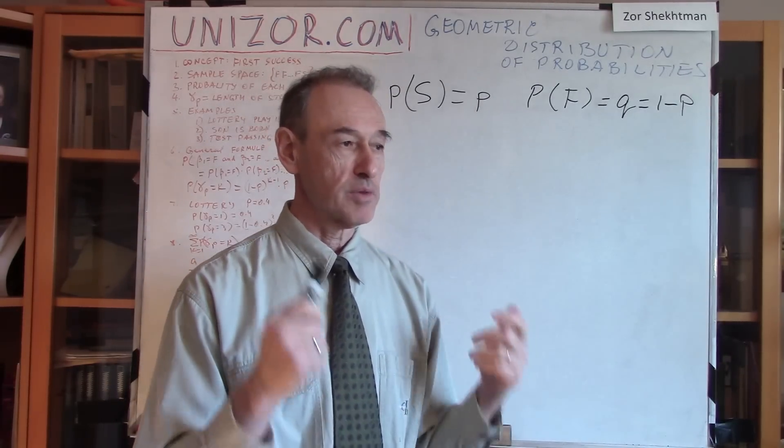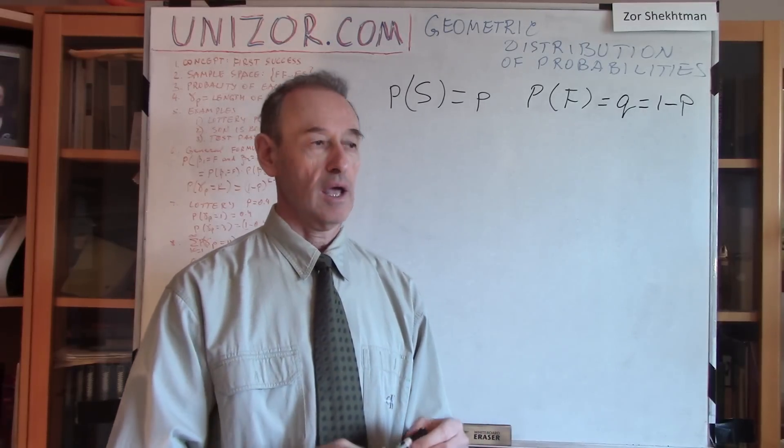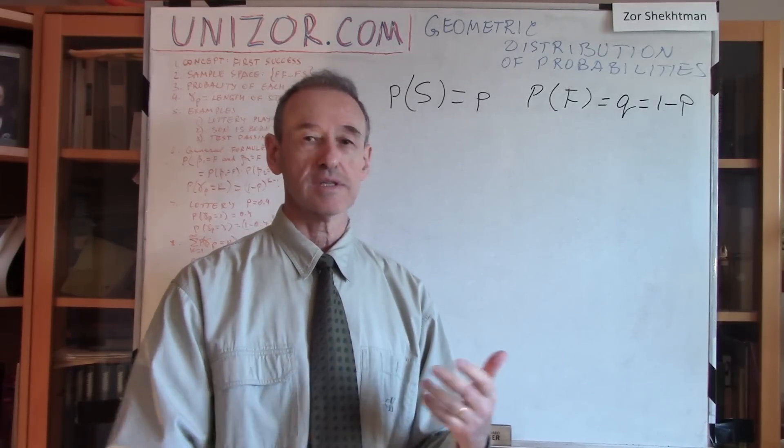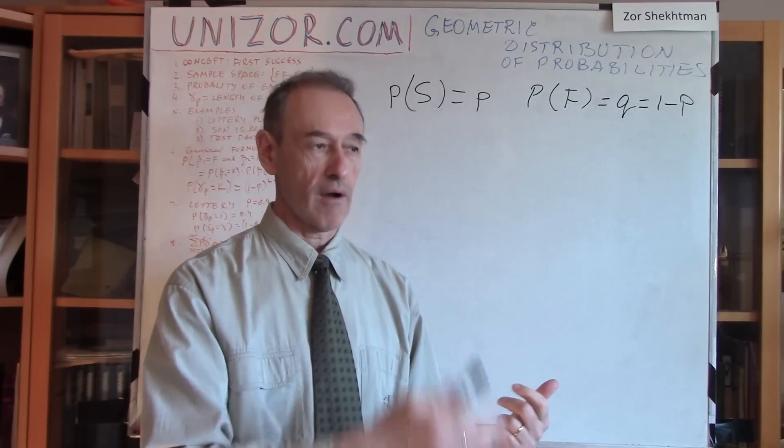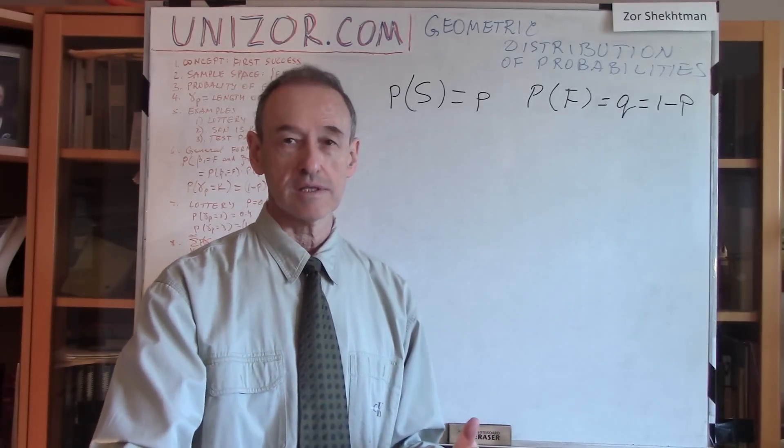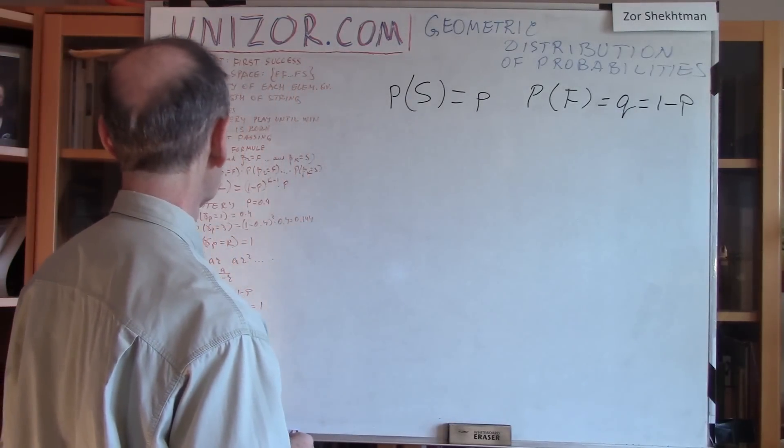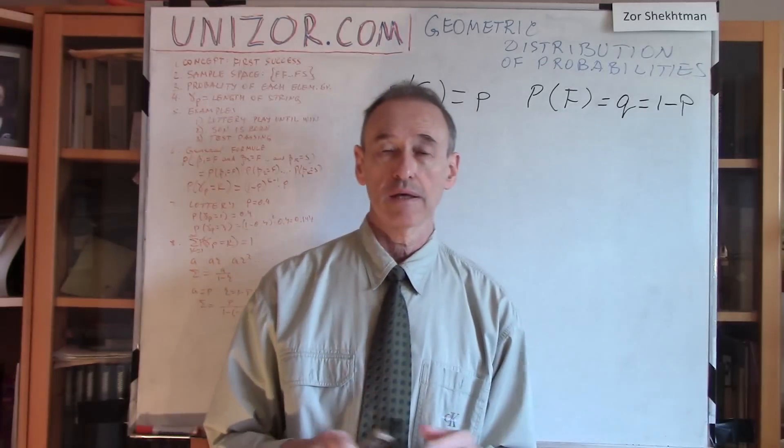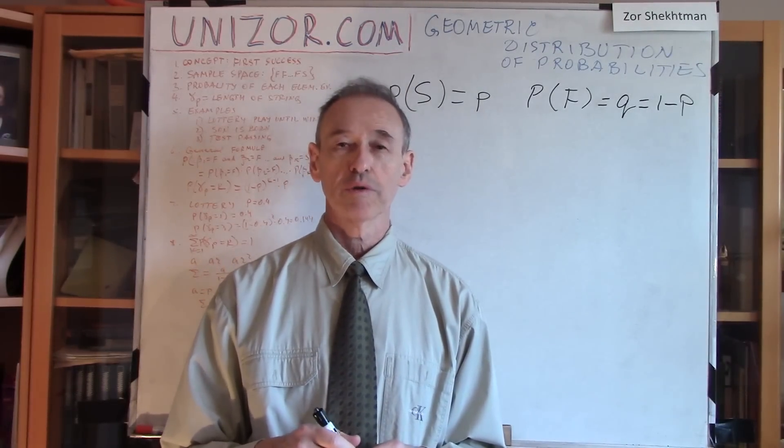So again, the Bernoulli trial is giving the birth of a child, and that is considered to be a success if it's a daughter, and a failure if it's a son. So they are failing and failing and failing to give birth to a daughter until they succeed. That's also the geometric distribution.